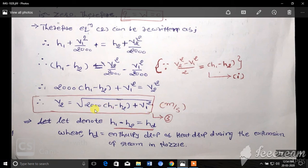Hello friends, myself Mahipal Pammar and we are going to continue our derivation from the last step. So our last step is V2 equals the square root of 2000 H1 minus H2 plus V1 squared. That velocity is in meters per second.